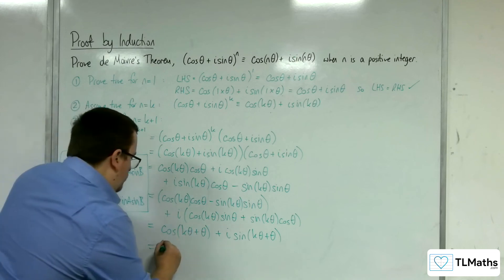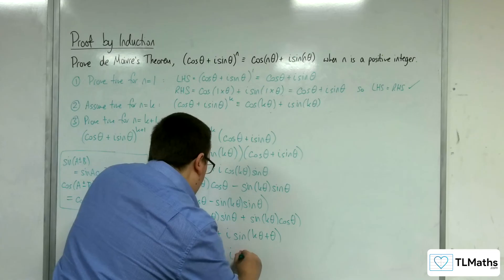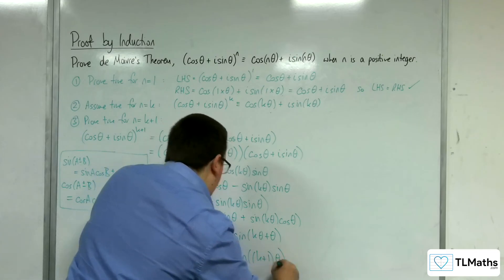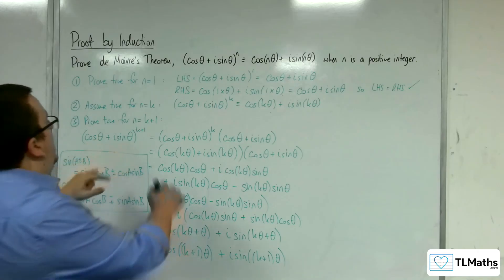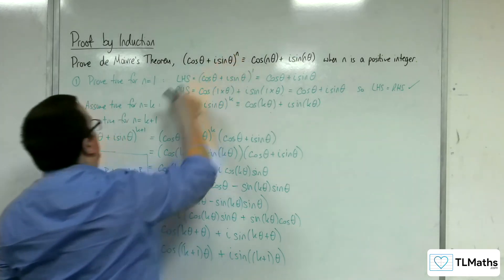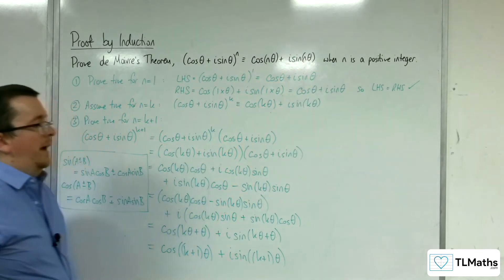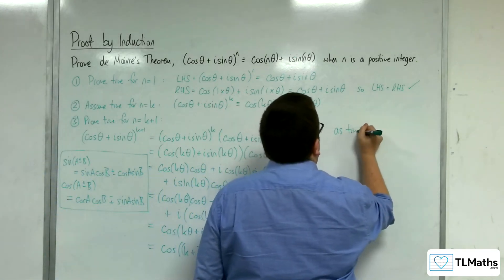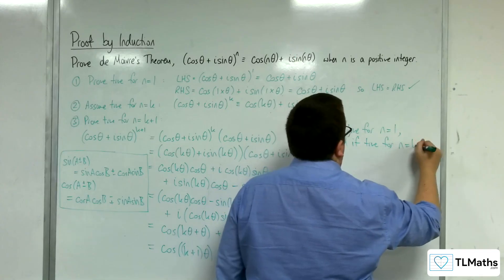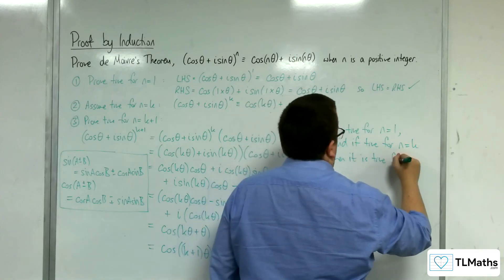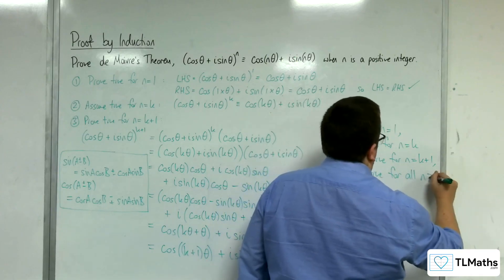The inside can be factorised, so we get cos((k+1)θ) + i sin((k+1)θ). This is precisely what we would expect with n replaced by k + 1. So it is true for n = k + 1. Therefore, as it is true for n = 1, and if true for n = k then it is true for n = k + 1, it is true for all n ≥ 1.